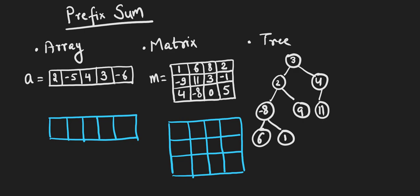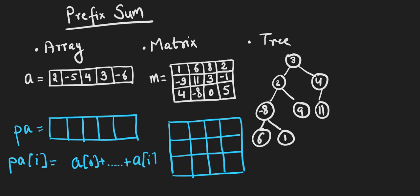Let's generalize and understand the concept of prefix sum. If we talk about prefix sum in a 1D array and create a prefix sum array, then at any index level, prefix sum of array A is defined as the sum of all elements of A starting from index 0 up to index i. If we add all of them, this becomes the prefix sum of array A.